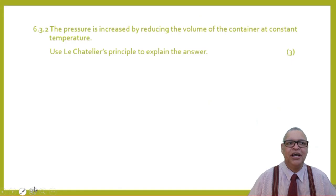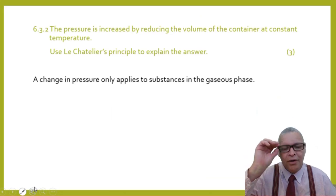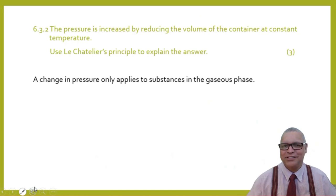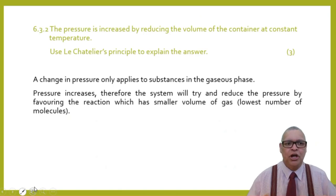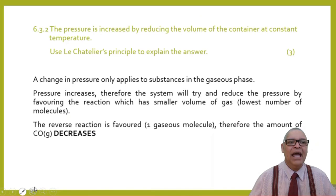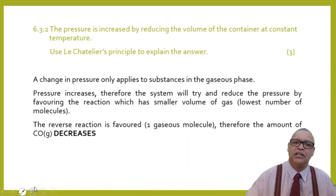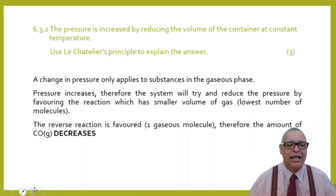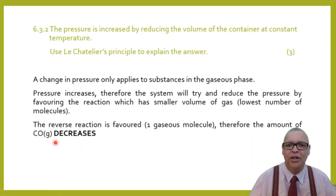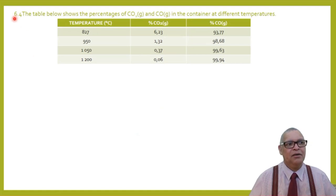Question 6.3.2: if the pressure is increased by reducing the volume at constant temperature, use Le Chatelier's principle to explain. A change in pressure only applies to substances in the gaseous phase. When pressure increases, the system favors the reaction with fewer moles of gas — the reverse reaction — since there is one mole of CO₂ versus two moles of CO. Therefore, the reverse reaction is favored and the amount of carbon monoxide decreases.